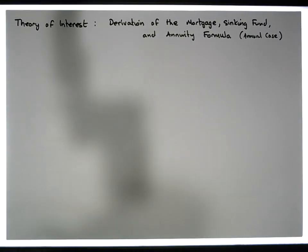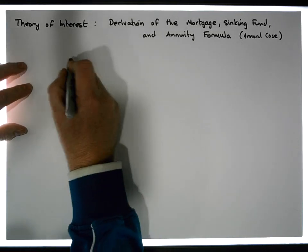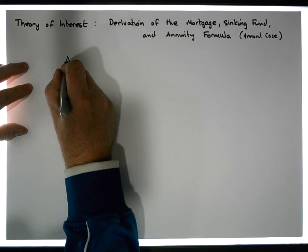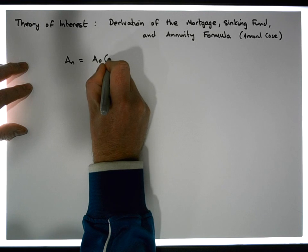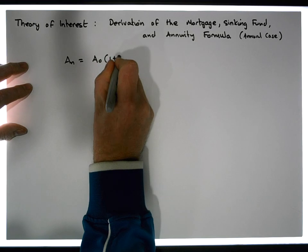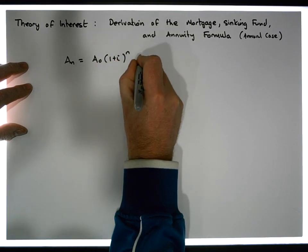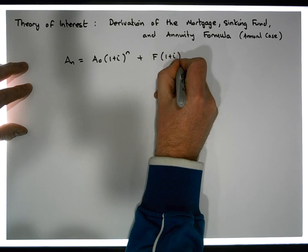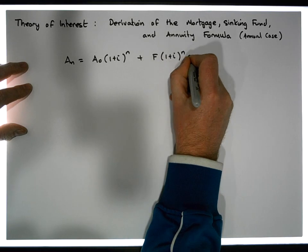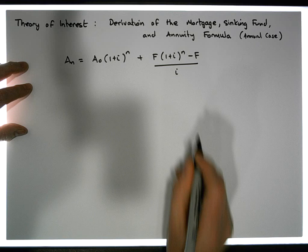Maybe if I just pull out of the sky the formula that we want to try to develop. The formula looks something like this: An is equal to A0 times (1 plus i) raised to the power of n, plus f times (1 plus i) raised to the power of n, minus f divided by i.